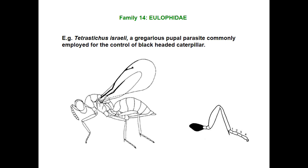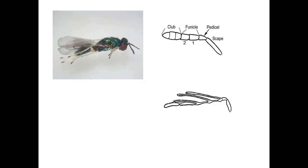Next family is Eulophidae. It is a minute pupal parasite. It has narrow fore wings with pubescence on the wing lamella. Hairs are not arranged in rows. The ovipositor is present almost at the tip of the abdomen. Best example is Tetrastichus israelensis, which is a gregarious pupal parasite.